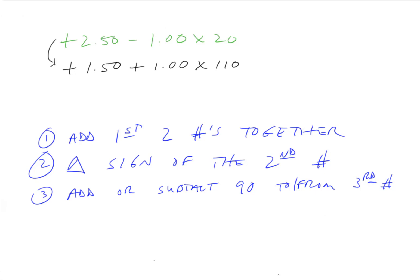To check our work, we can go back from plus cylinder to minus cylinder. Step one: add the first two numbers together — plus 1.50 and plus 1 is plus 2.50. Step two: change the sign of the second number. Step three: add or subtract 90 from the third number. And we get plus 2.50, minus 1, axis 20 — which is the same as what we started with. So it works! This is a quick and easy way to just flip-flop from plus cylinder to minus cylinder. Thanks.